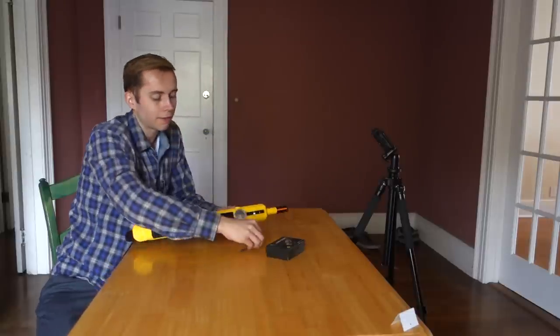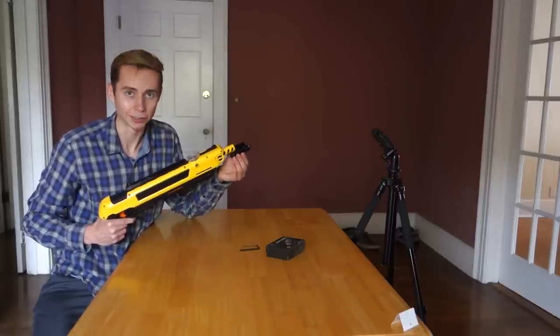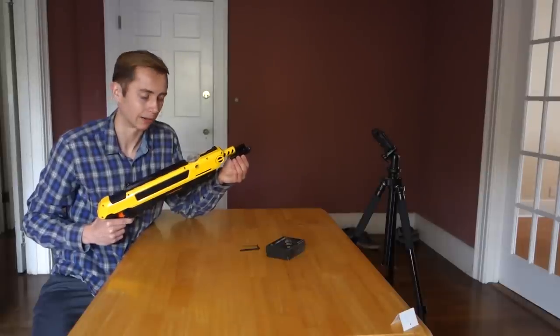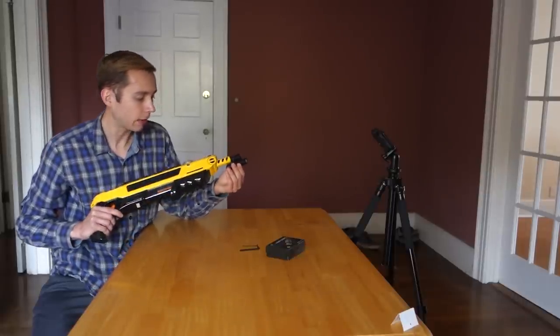Now you're going to want to have this on here snug, but I wouldn't tighten it down too much, just because the Bug Assault is made of plastic, whereas the sight is made of metal. So you don't want to risk cracking your barrel. Now that said, we're just about ready to go.